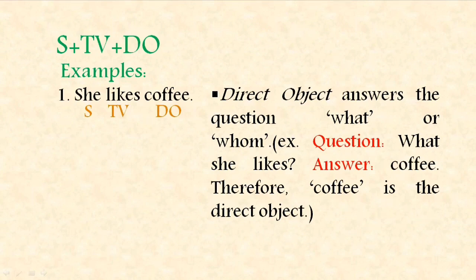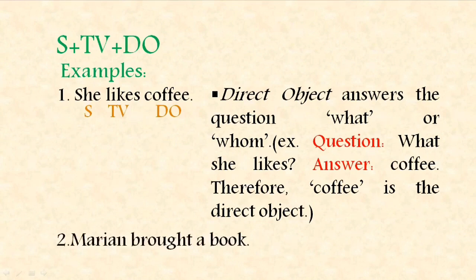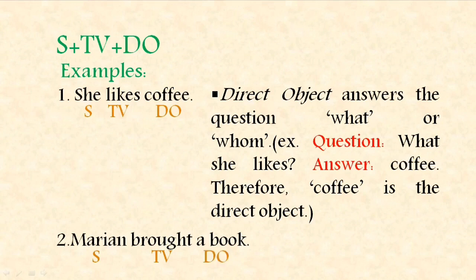'Marian brought a book' — this sentence follows the same pattern. Marian is the subject, 'brought' is the transitive verb, and 'book' is the direct object. What did Marian bring? A book — therefore it is the direct object.